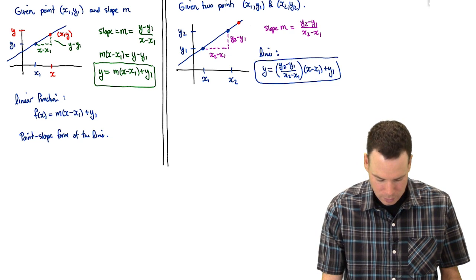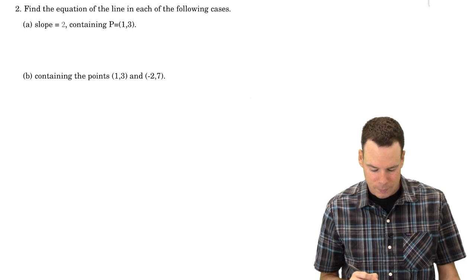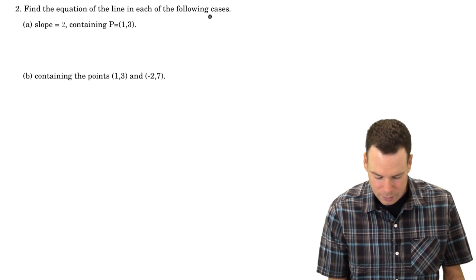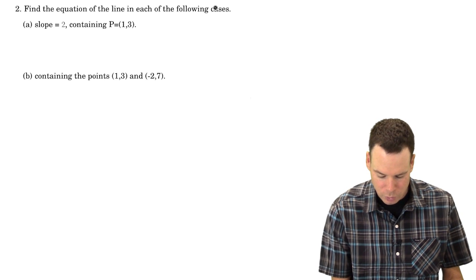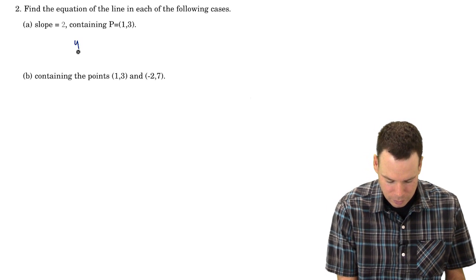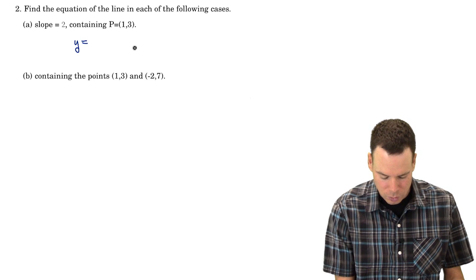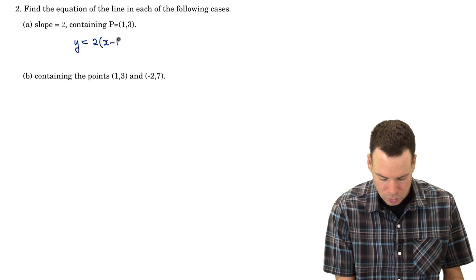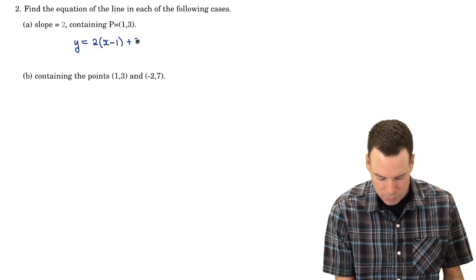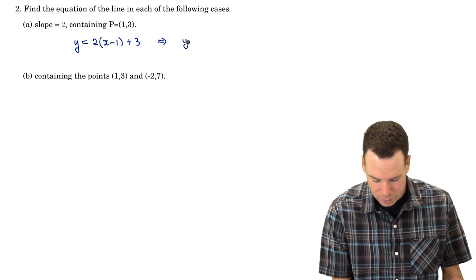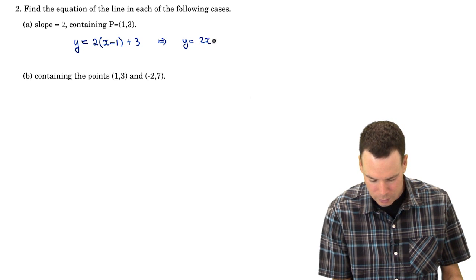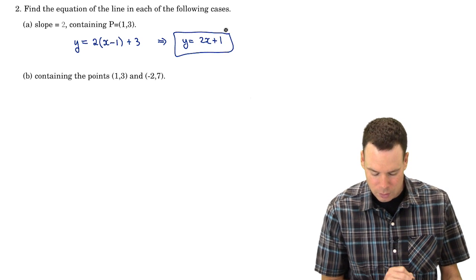Let's look at an example: find the equation of the line in each of the following cases. Here we've got a slope and a point, so we write y equals the slope times (x minus the x-coordinate of the point) plus the y-coordinate of the point. If you clean that up a little bit, it's 2x + 1. There is the equation of our line.